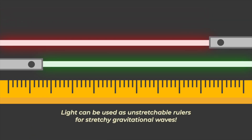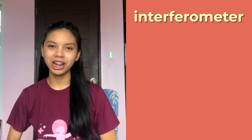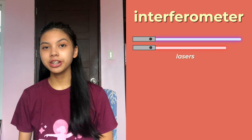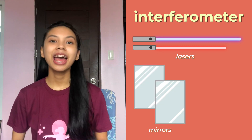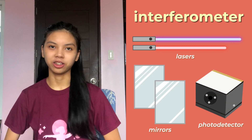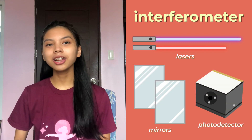This makes lasers the perfect tool for measuring gravitational waves. These gravitational waves can be recorded in observatories with the help of a device called an interferometer, composed of lasers, mirrors, and a photodetector, all enclosed in a big quiet area. The detection of gravitational waves all lies in the presence of a resulting light beam.